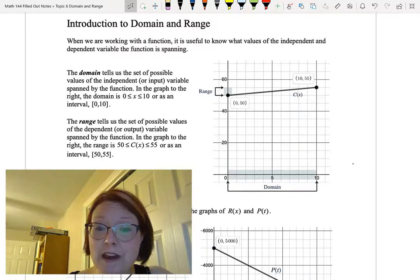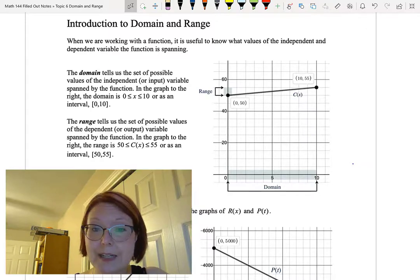We have a graph on the page which shows an increasing line that starts at 0 comma 50 with an endpoint and ends at 10 comma 55 with another endpoint. So a relatively short increasing line segment.